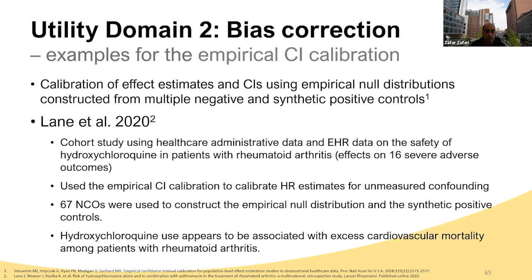The second method under bias correction was the empirical calibration method proposed by Schuemie et al. in 2018. They use a multiple set of negative and synthetic positive controls to build an empirical null distribution. A good example is a study by Lane et al., 2020—a cohort study looking at the safety of hydroxychloroquine in patients with rheumatoid arthritis. They used 67 negative control outcomes and synthetic positive controls, and after the empirical confidence interval calibration, they showed that hydroxychloroquine is associated with excess cardiovascular mortality among patients with rheumatoid arthritis.